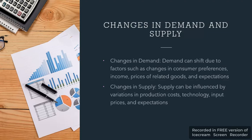Supply can be influenced by variation in production costs, technologies, input prices, and expectations. Production costs — supply changes. Variation in production costs, technologies, input prices, and expectations are the key factors.